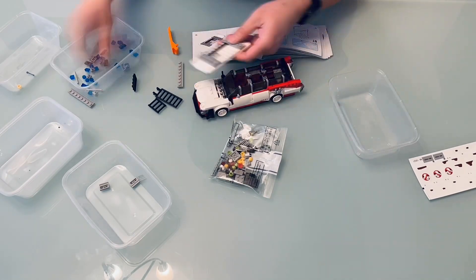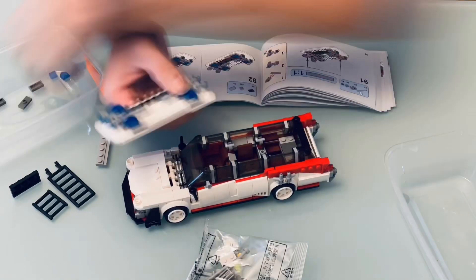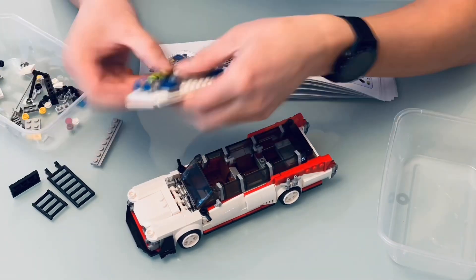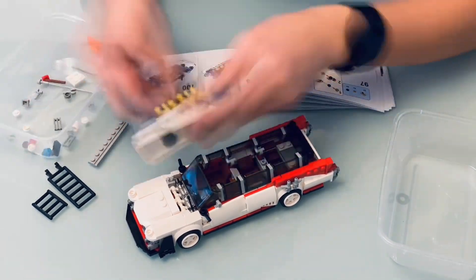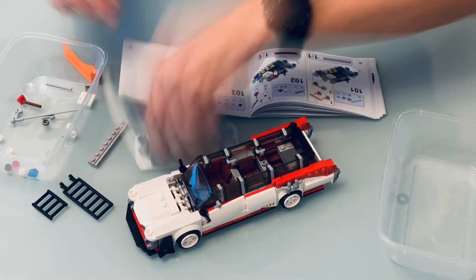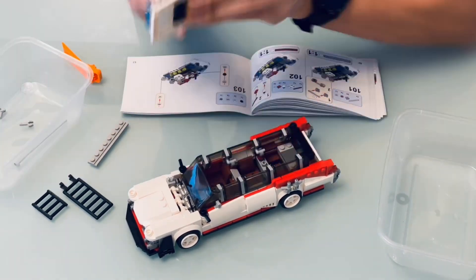The Lego version targeted 10 plus audience and had 508 pieces and came with 4 mini figs. This one comes with a higher brick count at 603 pieces, but doesn't come with any mini figs.